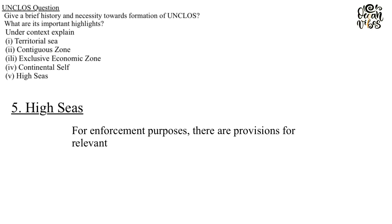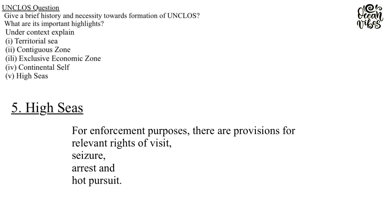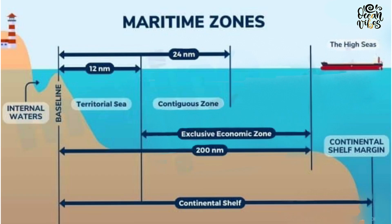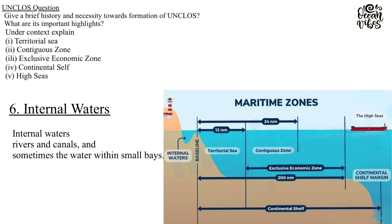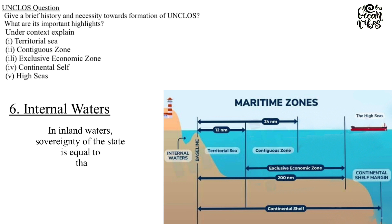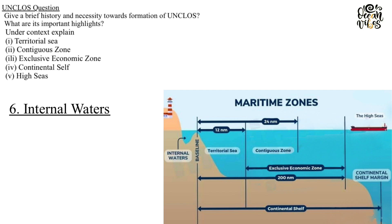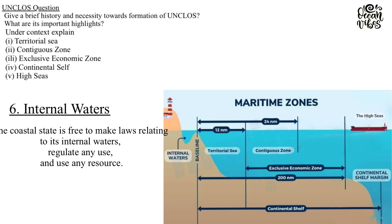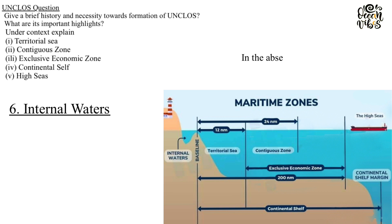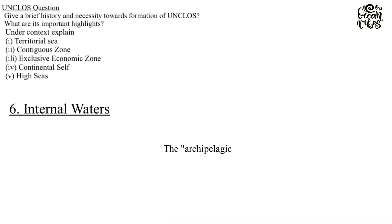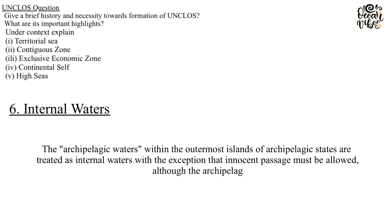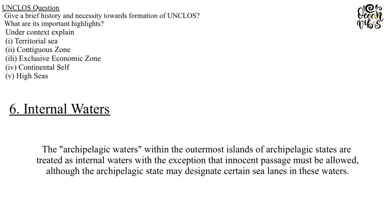For enforcement purposes, there are provisions for relevant rights of visit, seizure, arrest, and hot pursuit. Internal Waters: A nation's internal waters include waters on the landward side of the baseline of a nation's territorial waters, except in archipelagic states. It includes waterways such as rivers and canals, and sometimes the water within small bays. In inland waters, the sovereignty of the state is equal to that which it exercises on the mainland. The coastal state is free to make laws relating to its internal waters, regulate any use, and use any resource. In the absence of agreements to the contrary, foreign vessels have no right of passage within internal waters, and this lack of right to innocent passage is a key difference between internal waters and territorial waters. The archipelagic waters within the outermost islands of archipelagic states are treated as internal waters, with the exception that innocent passage must be allowed, although the archipelagic state may designate certain sea lanes in these waters.